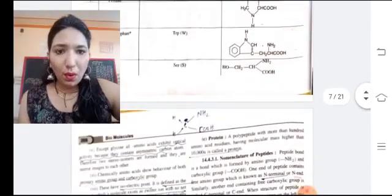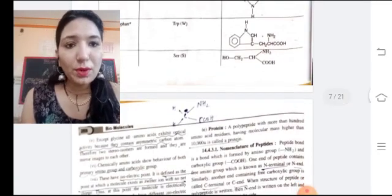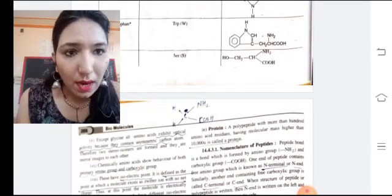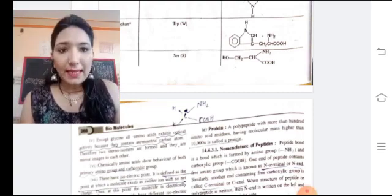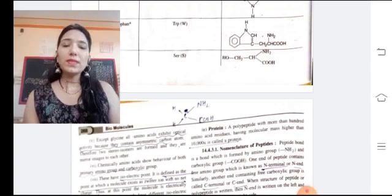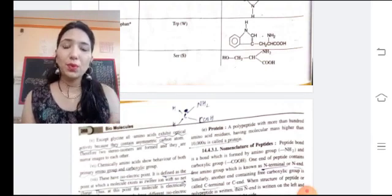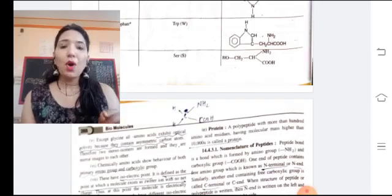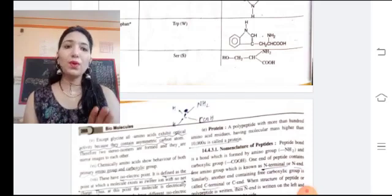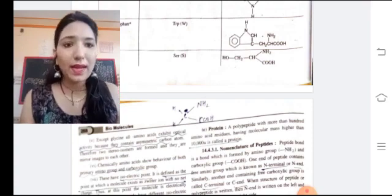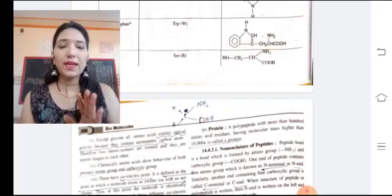All amino acids exhibit optical activity. So glycine is the most common amino acid and in this case the chiral carbon is not present.